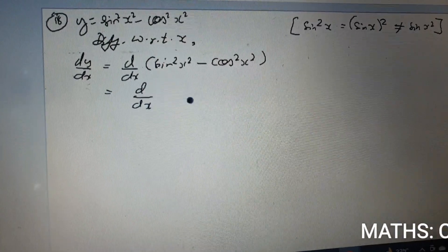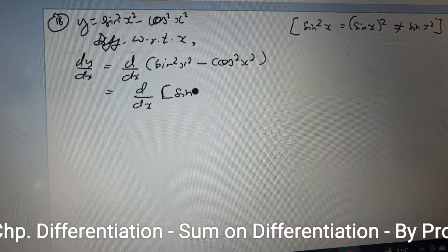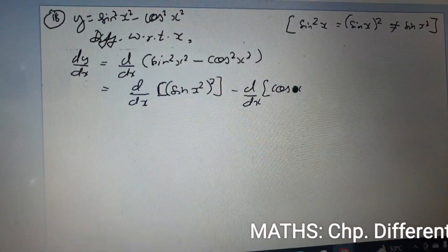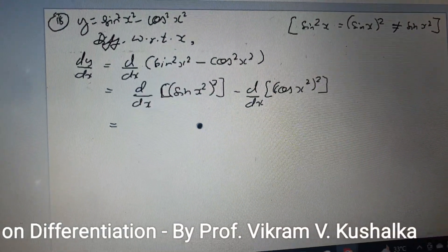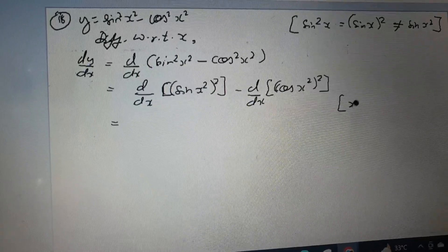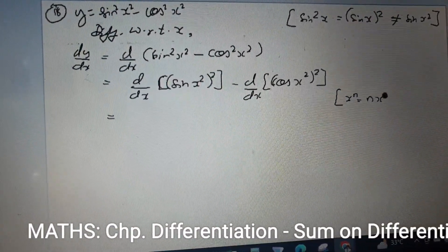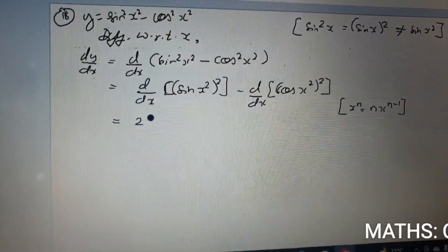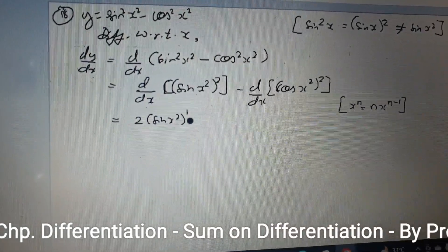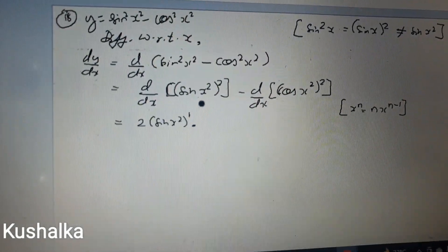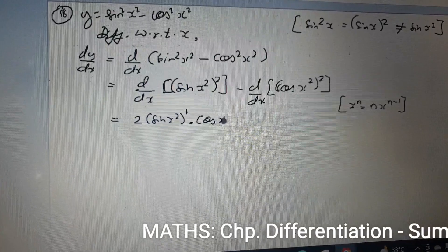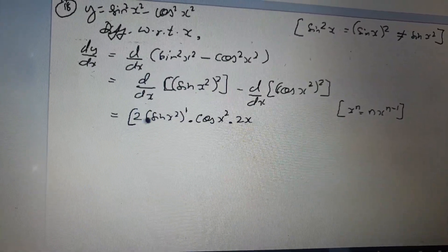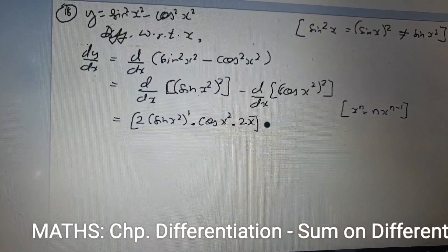We write d/dx of (sin x²)² minus d/dx of (cos x²)². Now applying the power rule — the differentiation of xⁿ is nxⁿ⁻¹ — the differentiation of (sin x²)² gives 2·(sin x²)¹. Applying the chain rule, we also differentiate sin x², which gives cos x², multiplied by the differentiation of x², which is 2x.